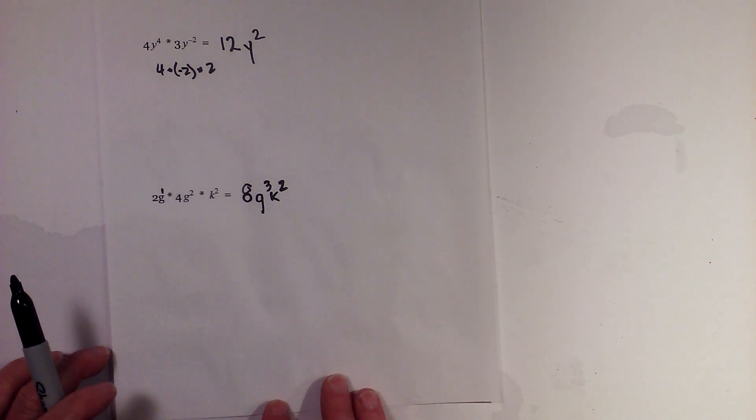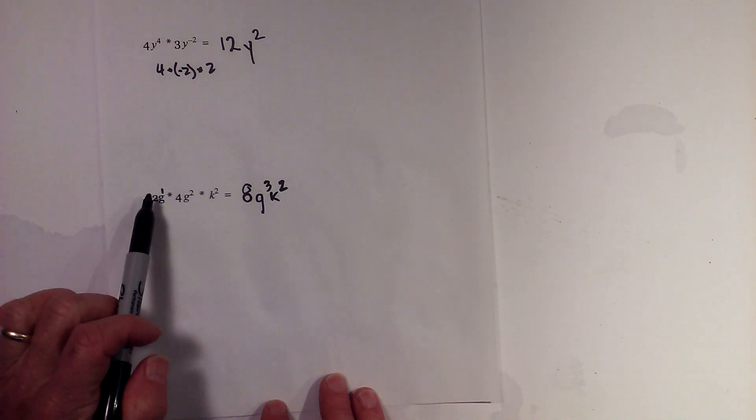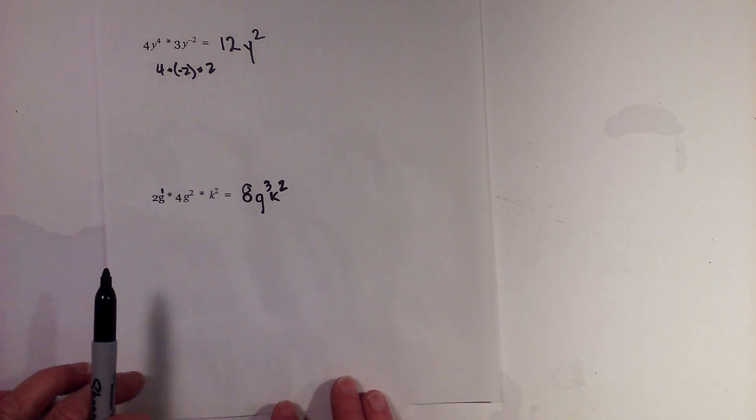Using the product rule of exponents: whenever you are multiplying and have like bases, just add the exponents. Thanks for watching! Moving Math uploads a new math and science video every day—please subscribe and share.